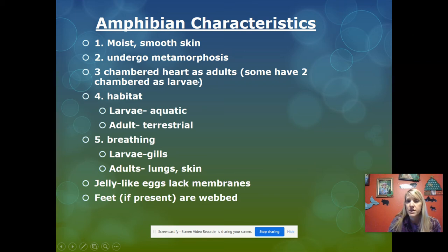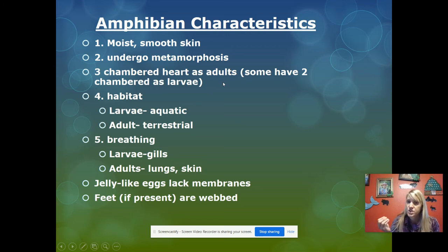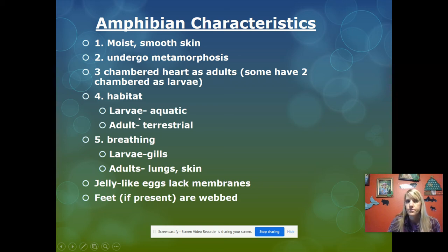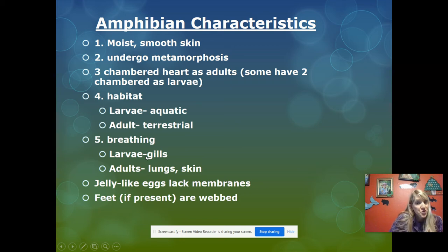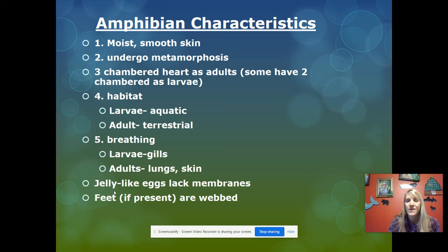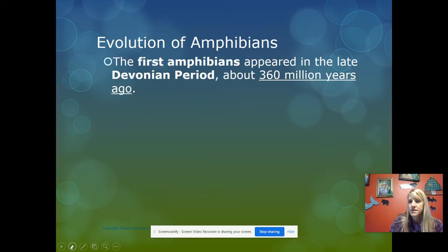They have a three-chambered heart as adults because it takes more energy to live on land, so their oxygenated and deoxygenated blood needs to be separated. Some have two chambers as larvae. Their larval habitat is aquatic; adults are terrestrial. Larvae breathe with gills; adults use lungs and skin. They lay jelly-like eggs that lack membranes, so any poisons in the water can get into the eggs. If they have feet, they're webbed to help them swim.